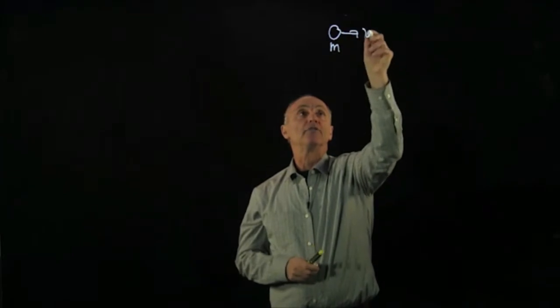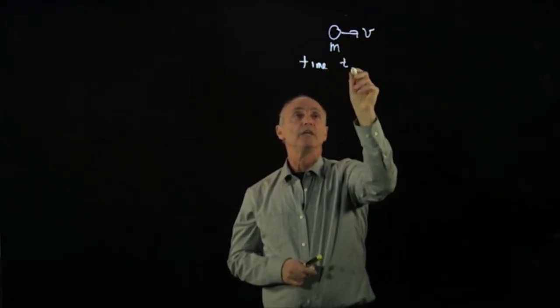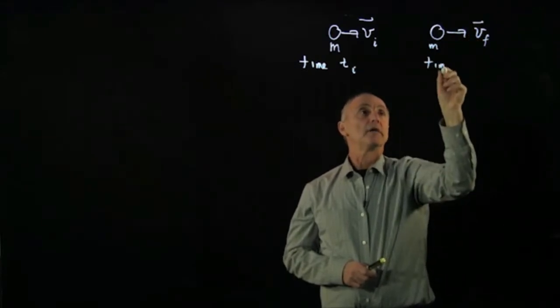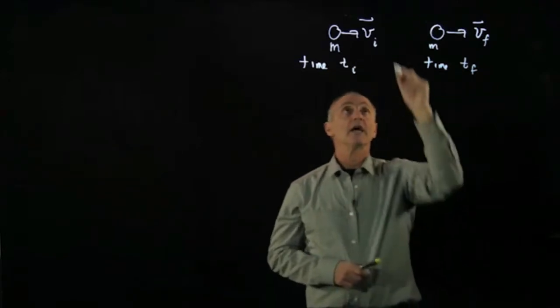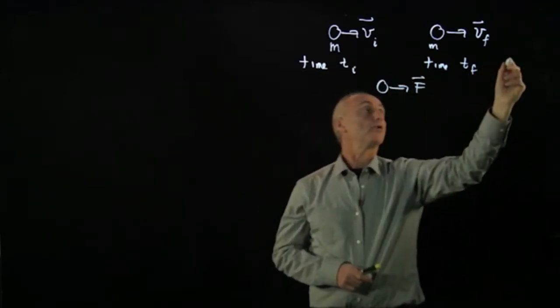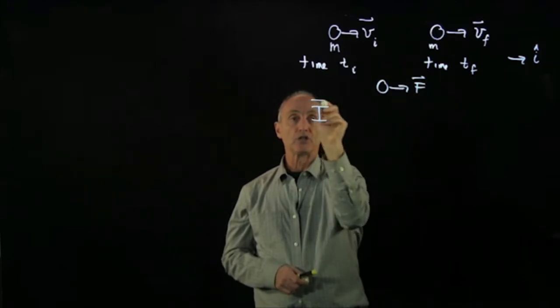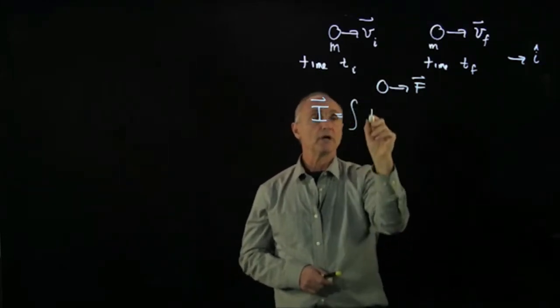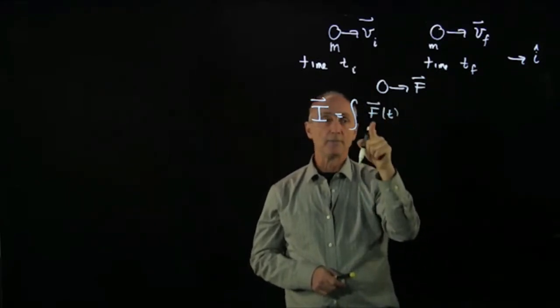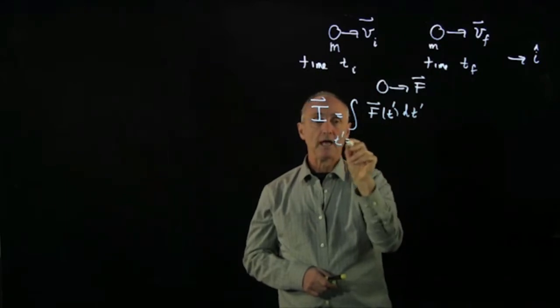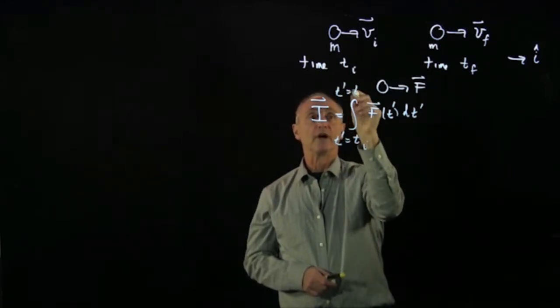We would now like to use Newton's second law to relate impulse to change in momentum. We have an object of mass m with an initial velocity at time t-initial, and then a little bit later at time t-final, the velocity has changed because throughout this time interval we're applying an impulse. Recall that impulse is a vector quantity, equal to the integral of the force as a function of time — force of t prime — from the initial to the final time period.